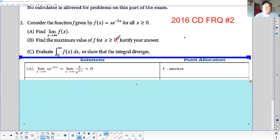Hello all, welcome. This is the 2016 course description FRQ number two. It is a no calculator problem. Consider the function f given by f(x) equals x times e to the negative 2x when x is greater than zero. Find the limit of f(x).